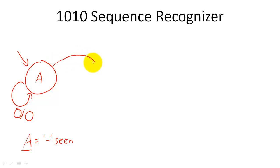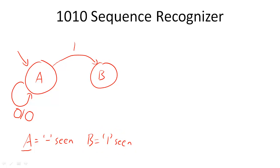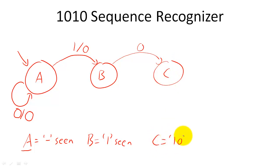If we receive a 1, we have received the first bit of our desired input sequence, so we transition to a new state that records that we have not seen our desired input sequence yet. For this second state, if we receive a 0, we have received the second bit of our desired input sequence, so we transition to a new state that records that we have seen 2 bits of our desired input sequence, but we have not seen our desired input sequence yet. If we receive a 1, we have still seen only the first bit of our desired input sequence, so we transition back to the same state, and we have not seen our desired input sequence yet.